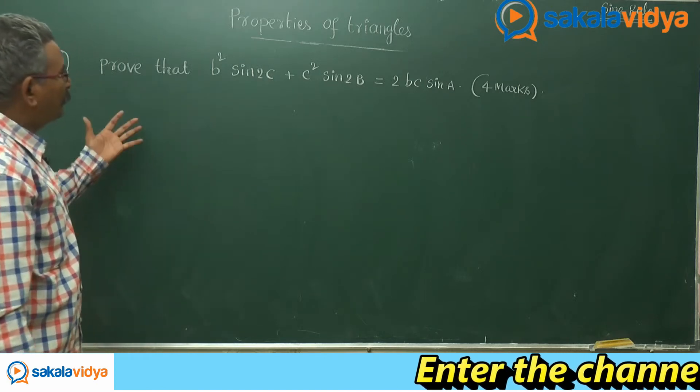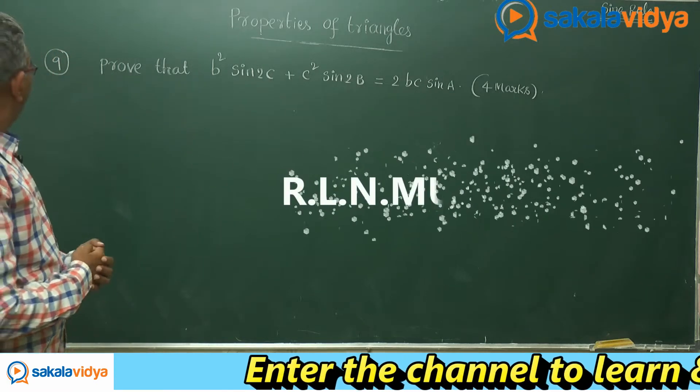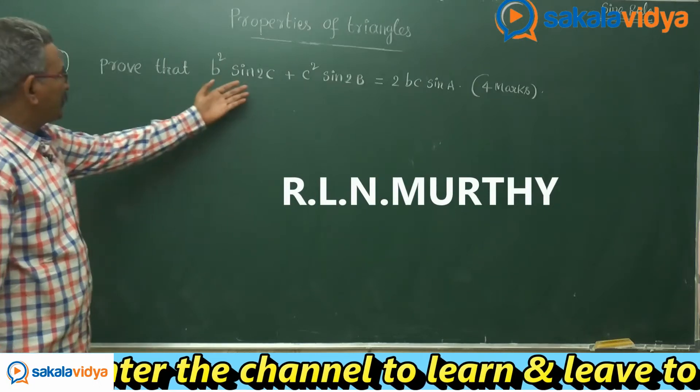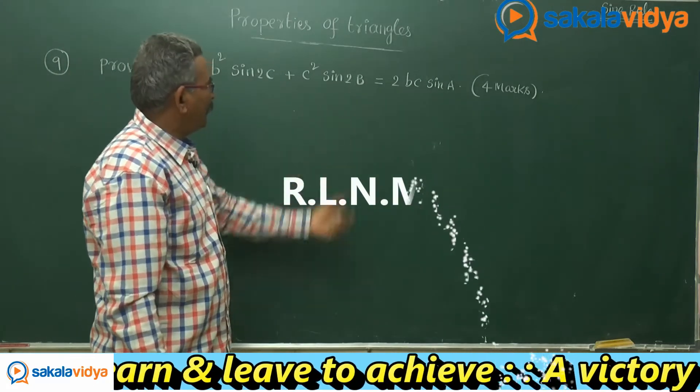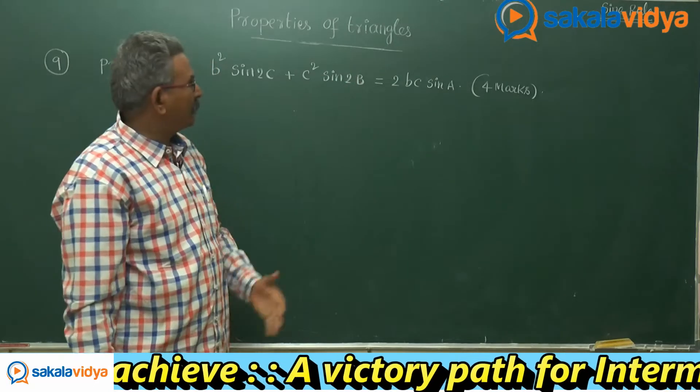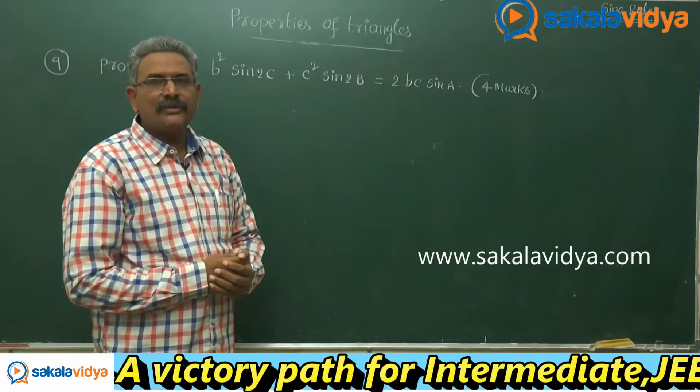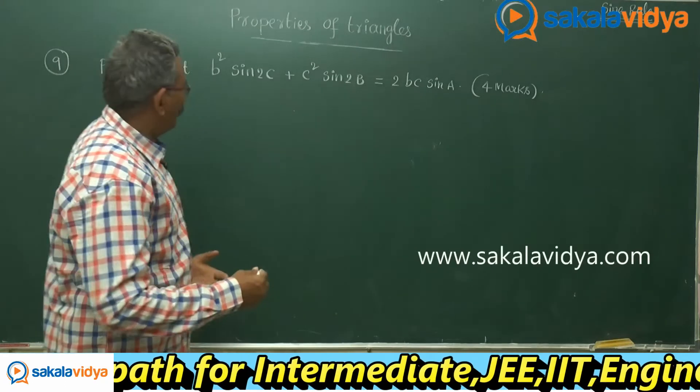Now one more problem we shall discuss. Prove that b squared sin 2c plus c squared sin 2b equals 2bc sin a. This also can be done using sine rule only. Let us solve it.